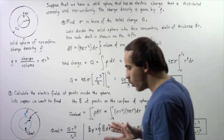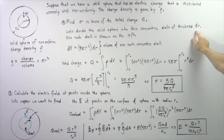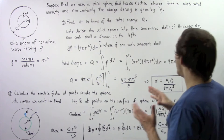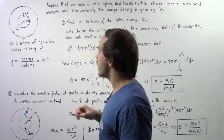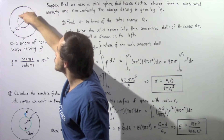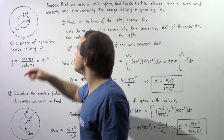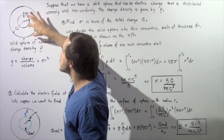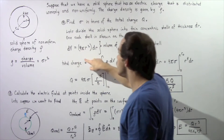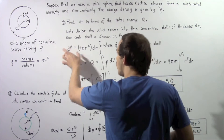In the first step, we divide our solid sphere into thin concentric shells of infinitely small thickness dr. One such shell has radius r and thickness dr. The surface area of this shell is 4πr². Multiplying the surface area by thickness dr gives the volume of the shell, which is also infinitely small.